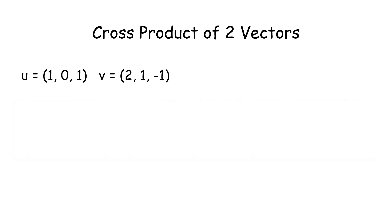So if we had this example, then we have u times v is given to us as i, j, and k. So u1, u2, u3, we've got 1, 0, 1 and v1, v2, v3, we have 2, 1, negative 1.